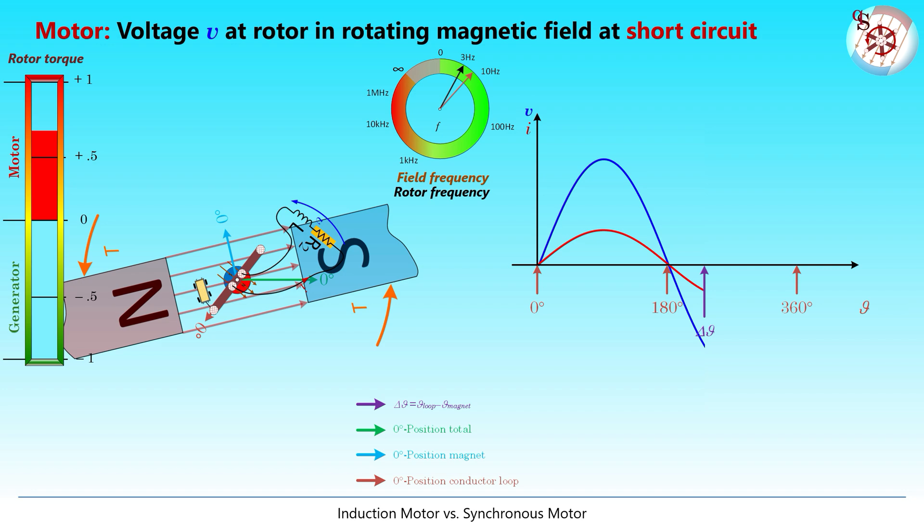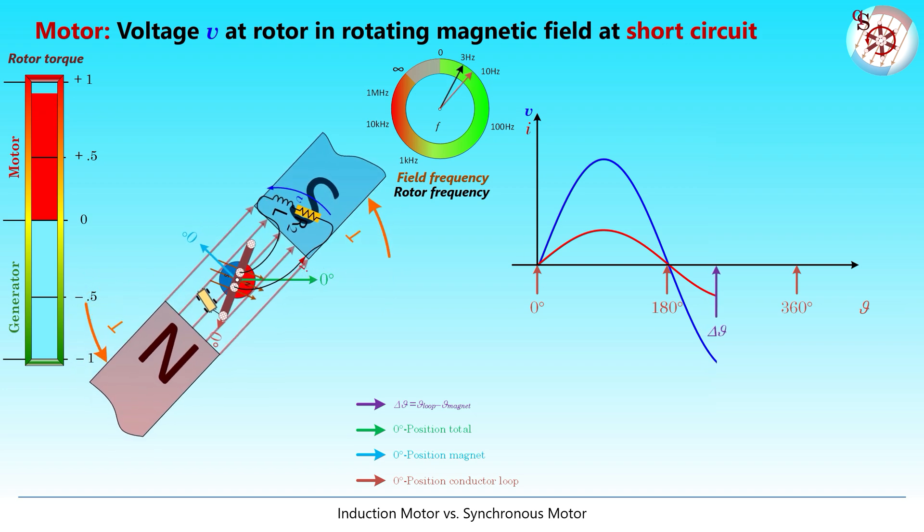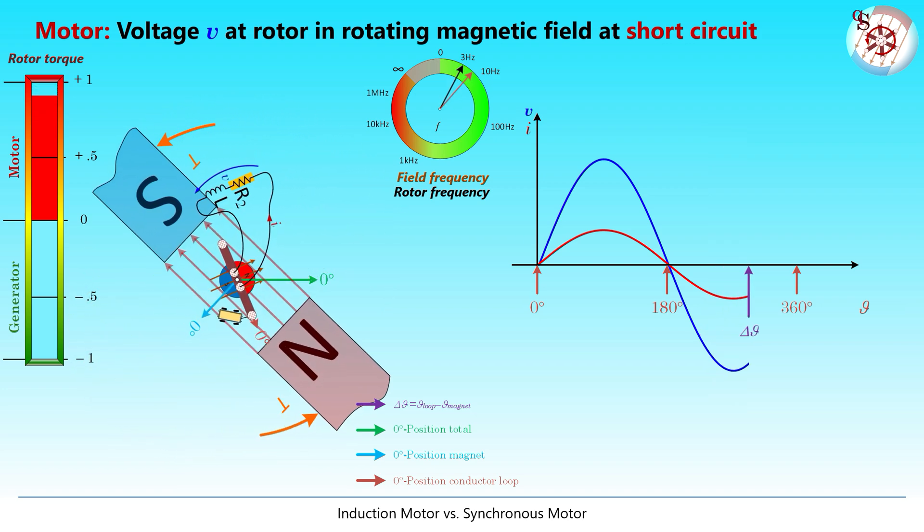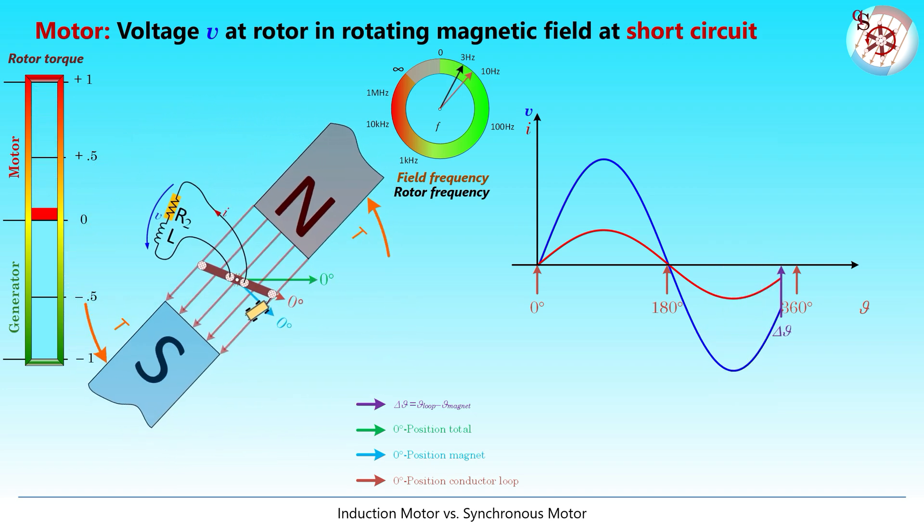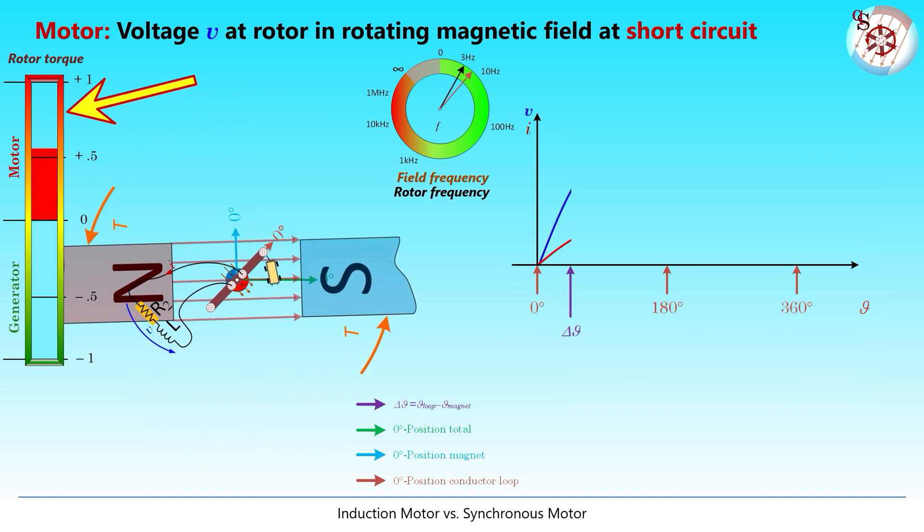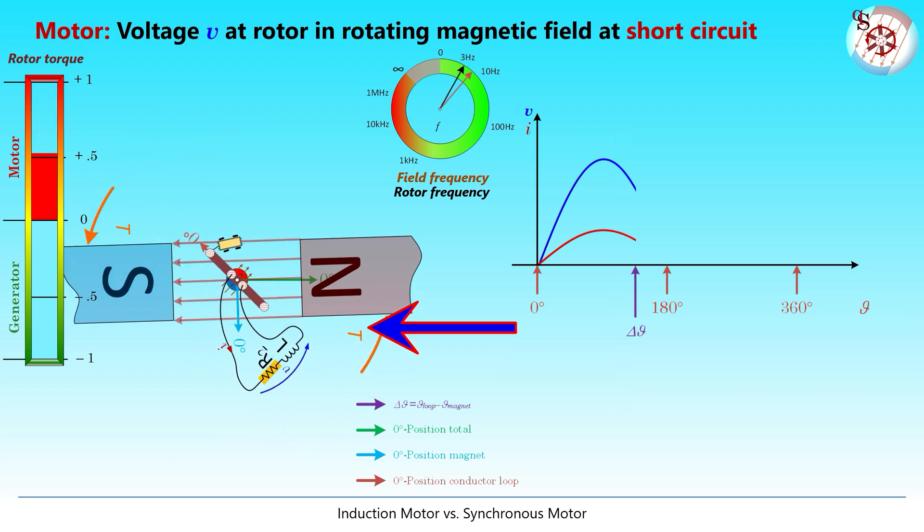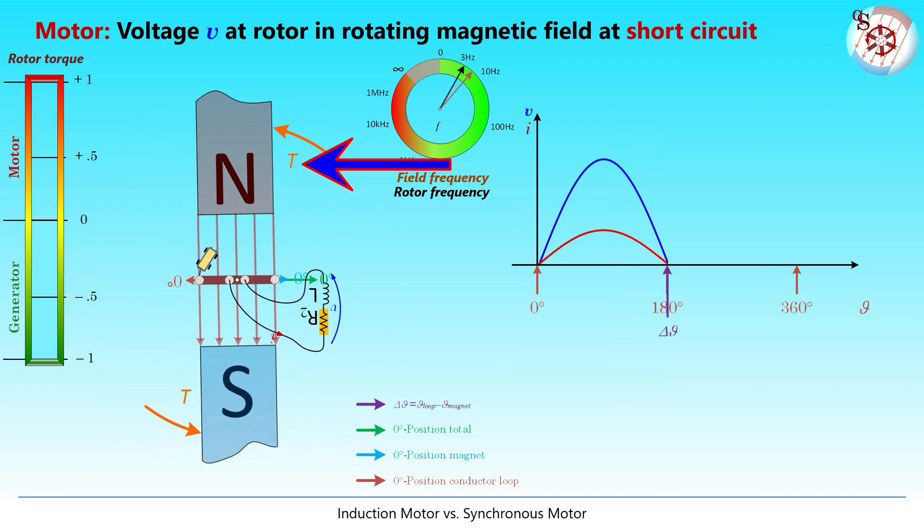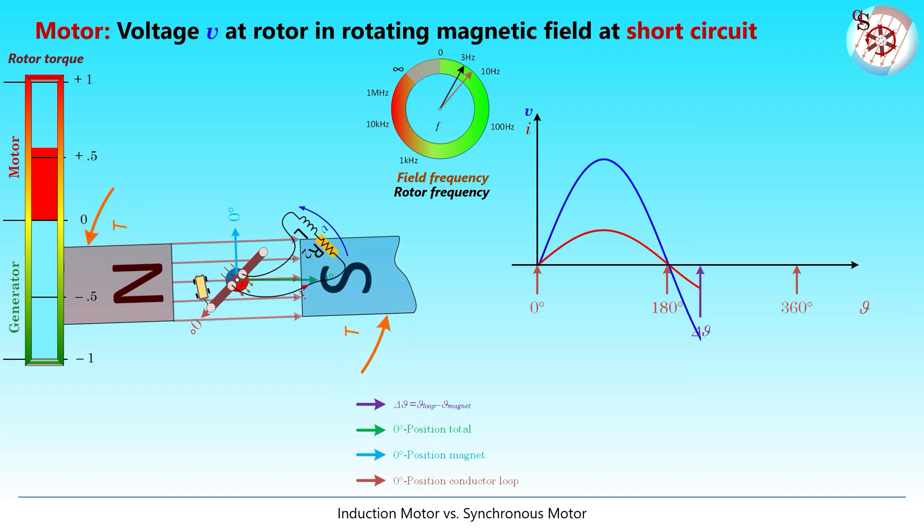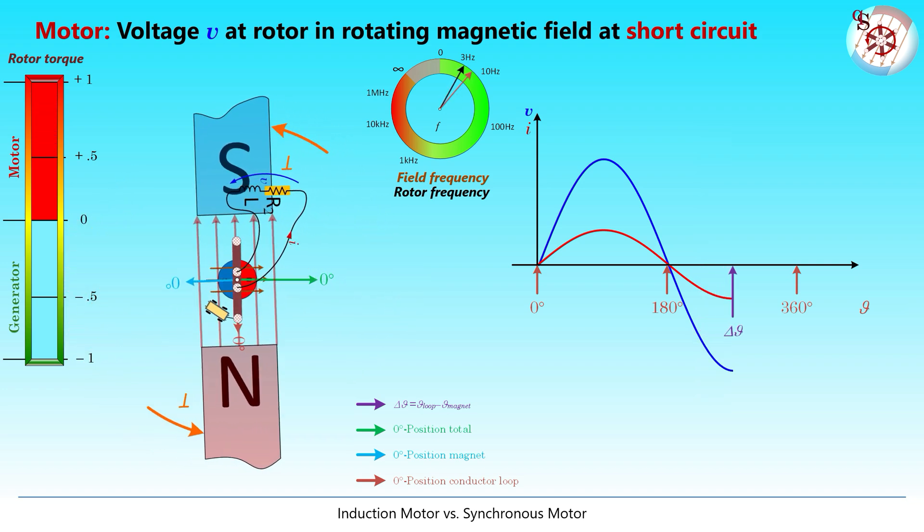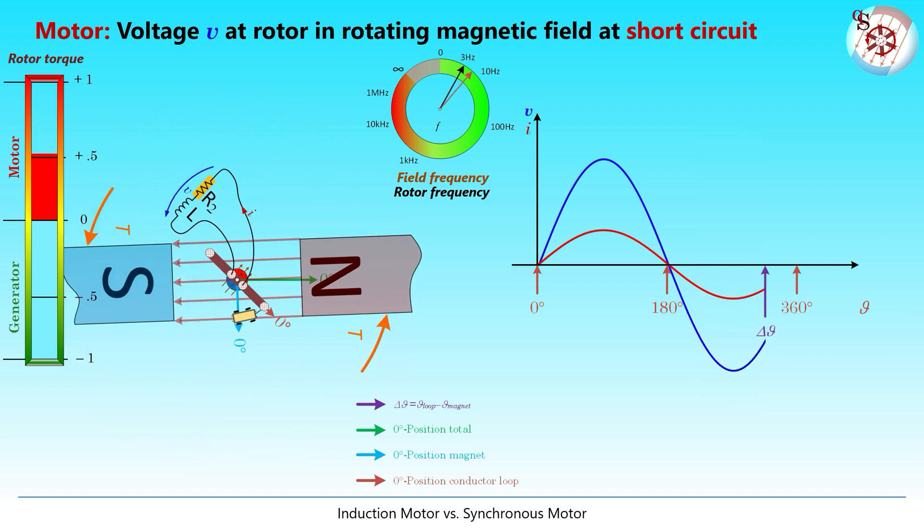North attracts south, south attracts north, south repels south and north north. For a single loop we end up with this pulsating torque indicated on this meter. This time the outer magnet has to be pushed to keep its rotational speed. If this magnet is created by a three-phase voltage system, this is done by withdrawing power from the grid.